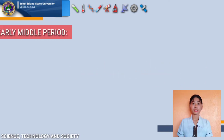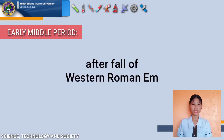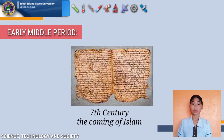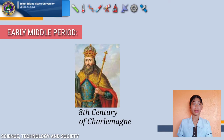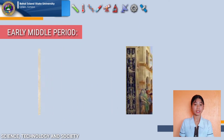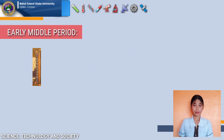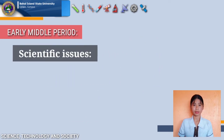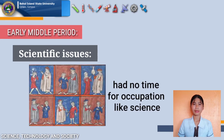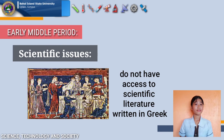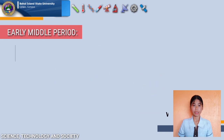During the Early Middle Period, which began after the fall of the Western Roman Empire in 476 AD, the 7th century marked the coming of Islam and the 8th century saw the rise of Charlemagne. Intellectual, scientific, and technological activities were concentrated mainly in the Christian faith. Medicine and botanical knowledge were discovered and used for the church's duty to help and tend the sick. Two key issues limited science at this time: medieval intellectuals had little time for occupations like science, and clerics and thinkers did not have access to the vast amount of scientific literature written in Greek.